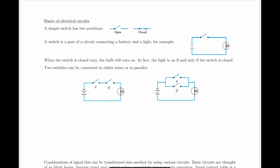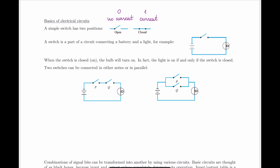A simple switch has two positions — it can be open or it can be closed. If it's open and I have a current running through, it won't be able to make it from the left side of the wire to the right side, meaning there's no current going through, which we denote with zero. When the switch is closed, the current can make it all the way through and there is current on the right-hand side, denoted by one. The absence of current is zero; the presence is one.